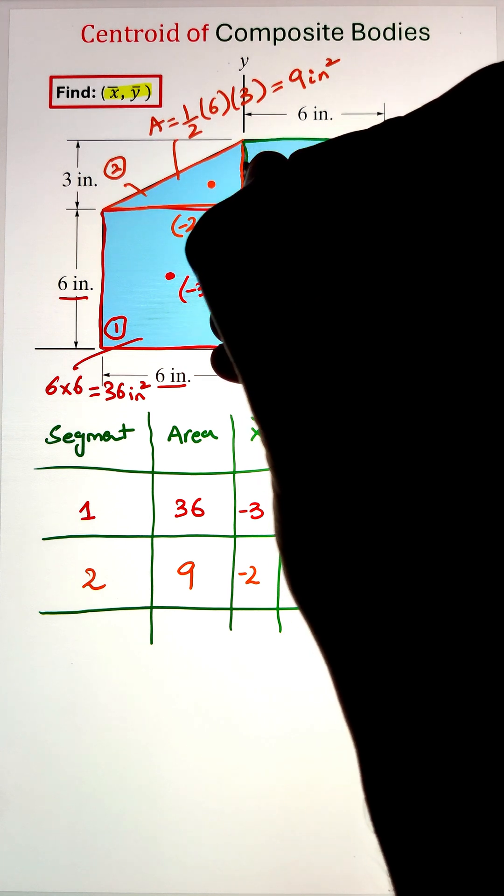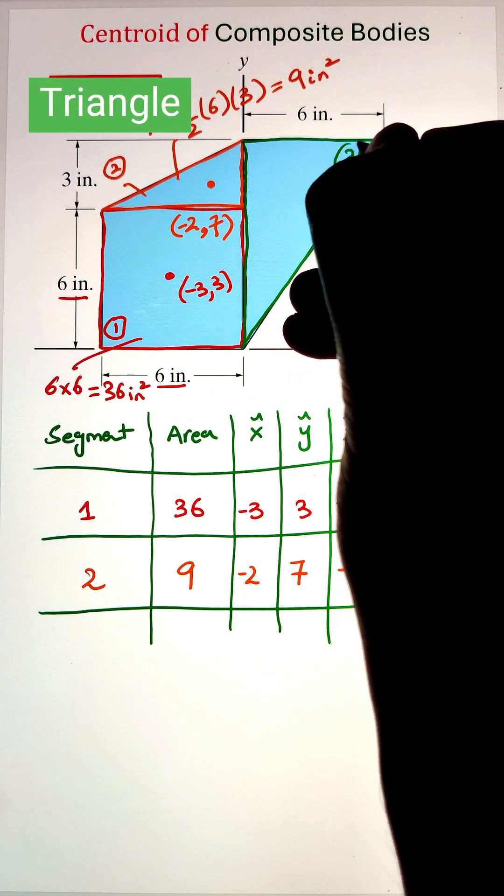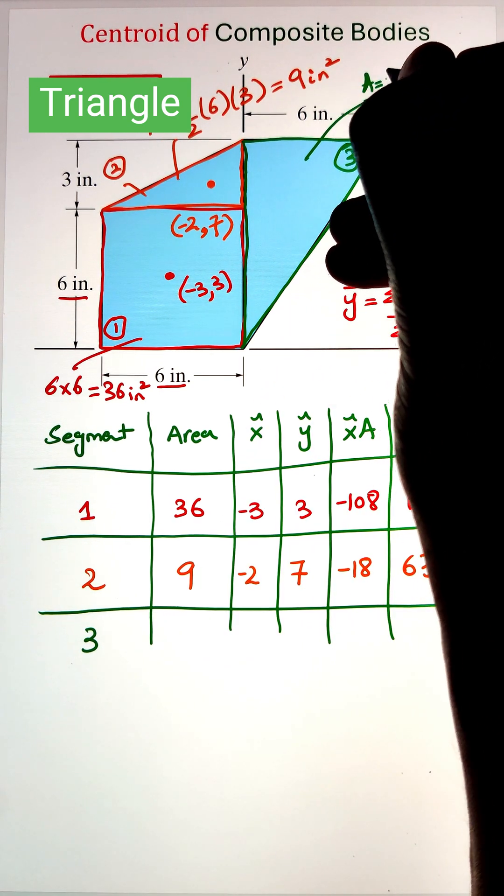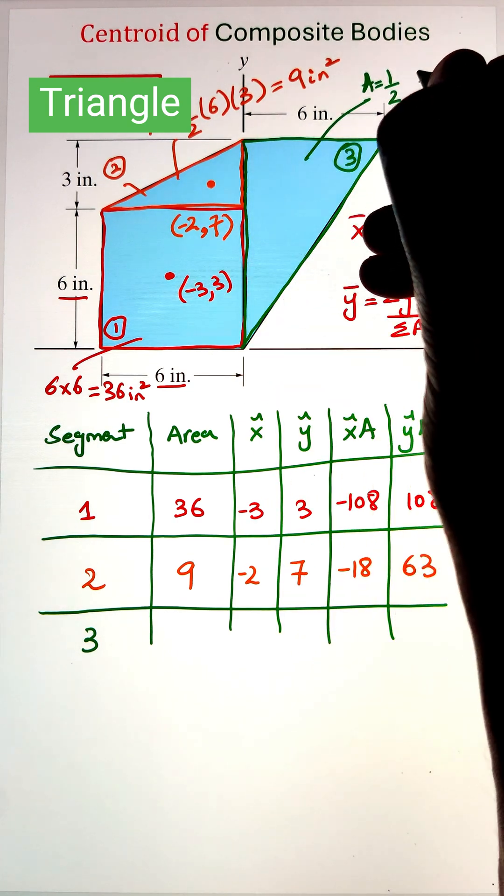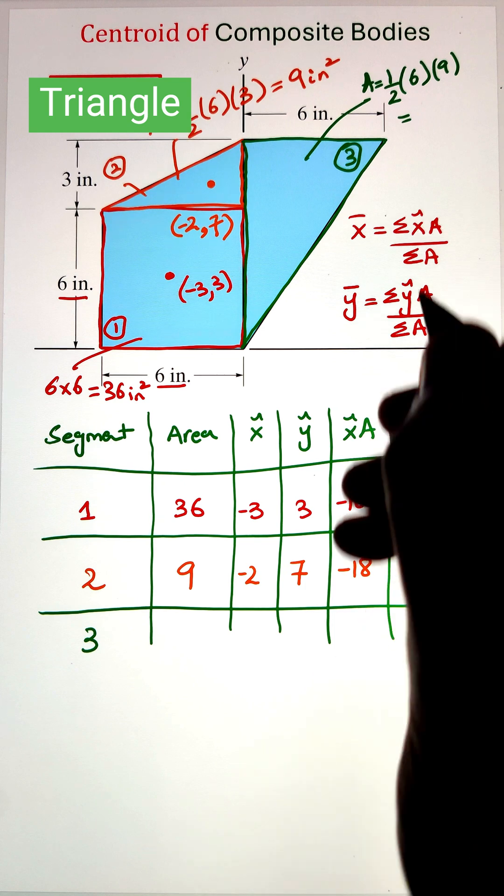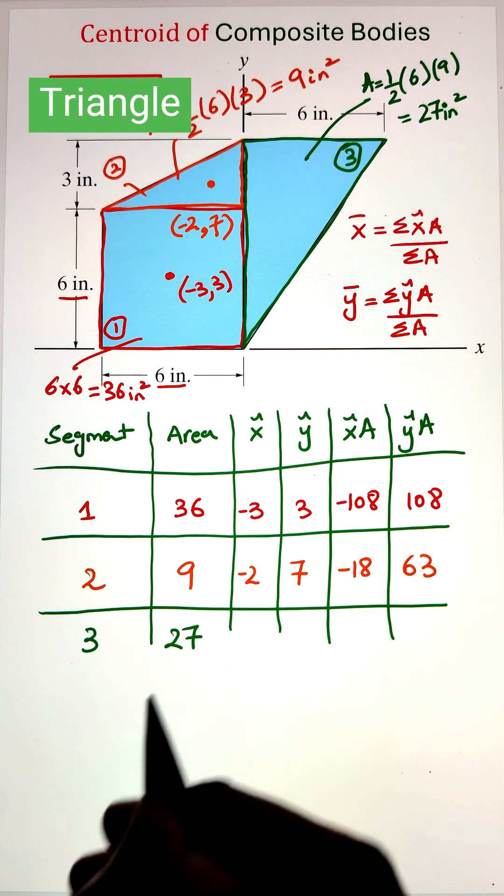Finally, we have our third segment that is also a right angle triangle having a base of 6 inches and height of 9 inches. So the area can be calculated by multiplying the base and height and dividing it by 2. That is 27 square inches.